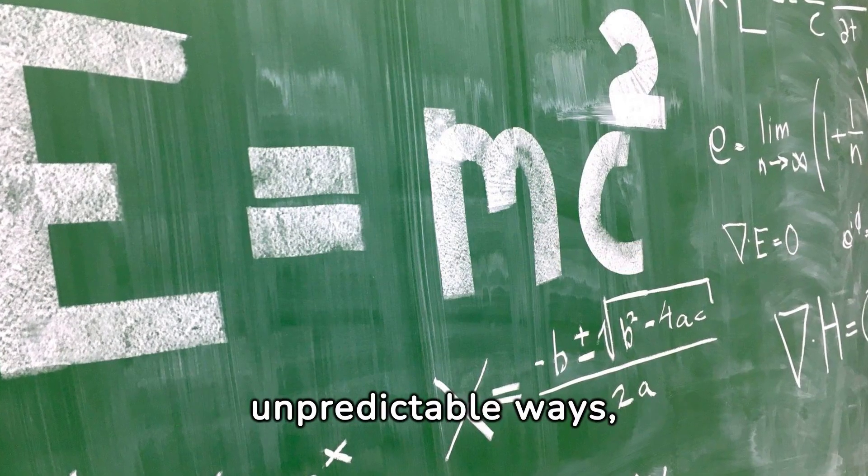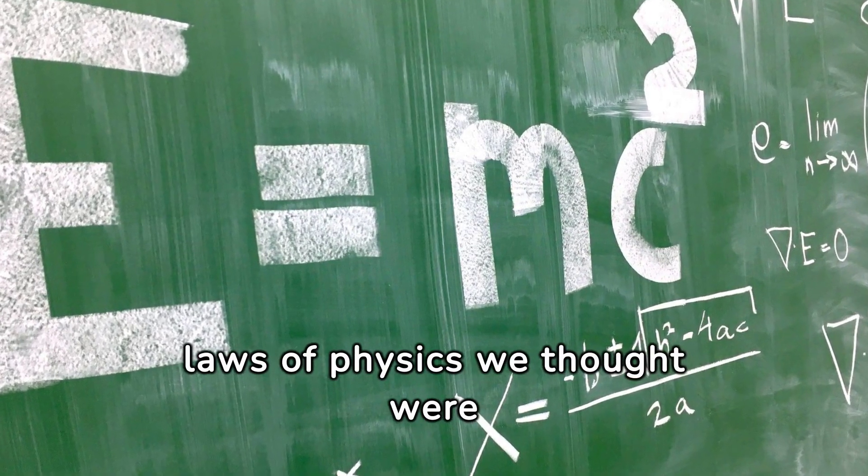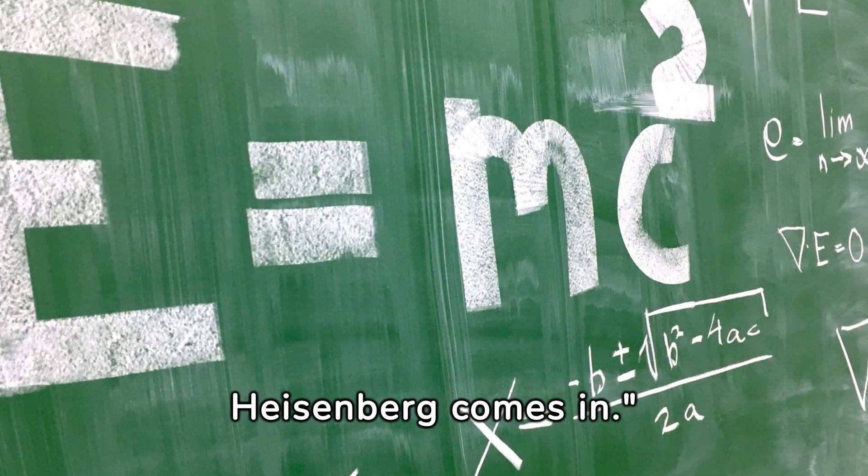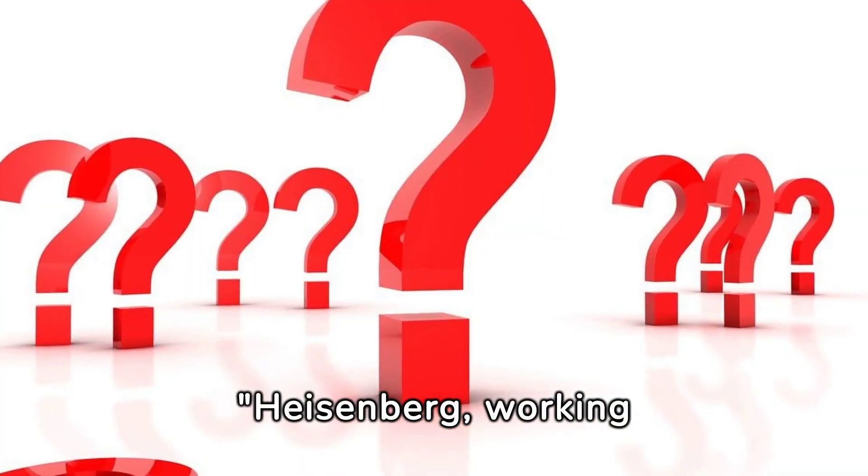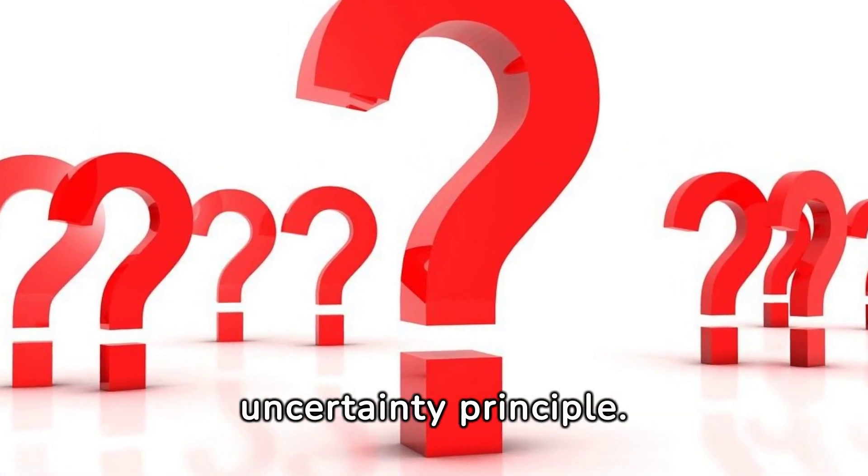They behaved in strange and unpredictable ways, defying our common sense and the laws of physics we thought were universal. And this is where Heisenberg comes in. Heisenberg, working on these new and amazing ideas, proposed a revolutionary concept, the uncertainty principle.